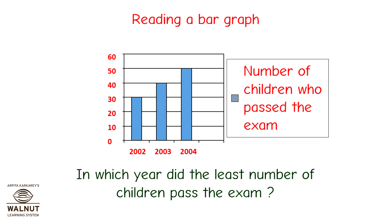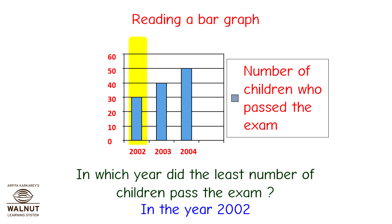In which year did the least number of children pass the exam? Here, we have to find the least — that means the minimum. So we look for the bar which is the shortest. That is this one. And what year is it? 2002. So the answer is in the year 2002.